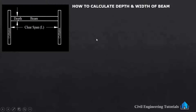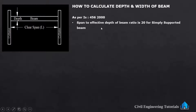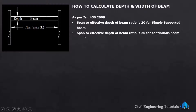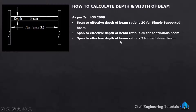As per IS 456-2000, span to effective depth of beam ratio is 20 for simply supported beam, 26 for continuous beam, and 7 for cantilever beam.